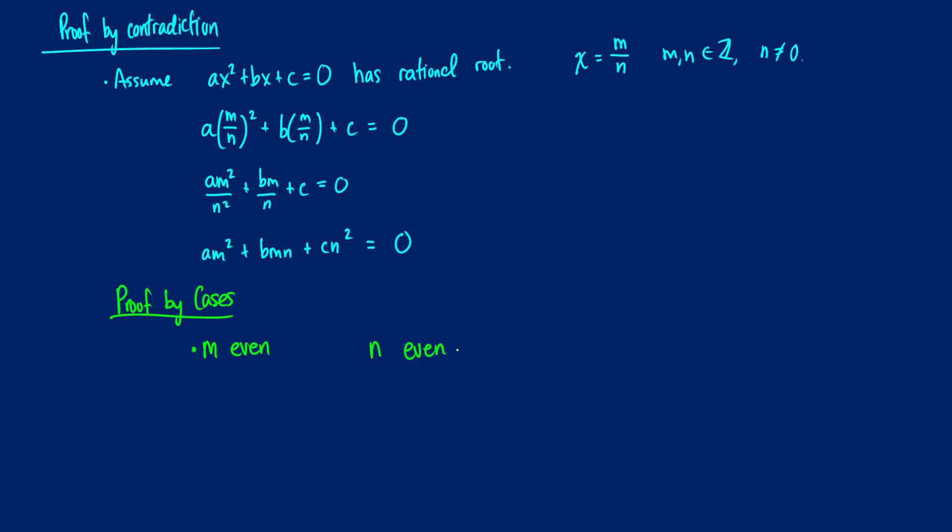Okay, so one important thing that we should probably do here is assume for our rational root, m over n, that this thing is in lowest terms. So a minimal fraction. Maybe let's use a different term. So there's no common factor.